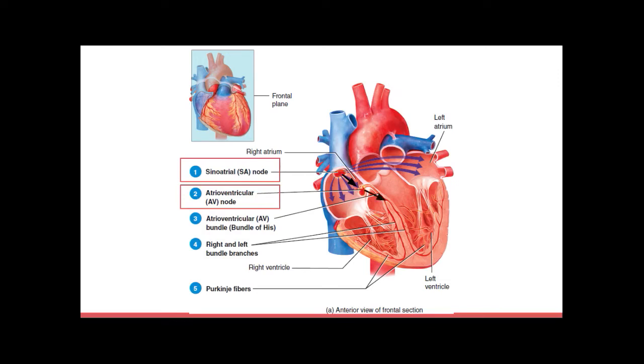And from the AV node, the action potential moves to the atrioventricular bundle, also known as the bundle of His. This bundle is the only site where action potentials can conduct from the atria to the ventricles. So it's very important.